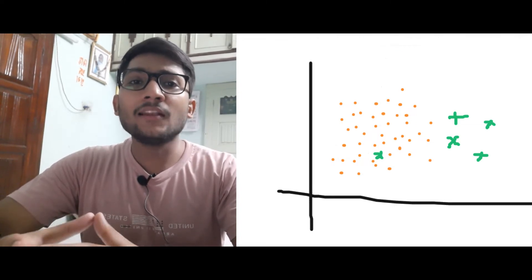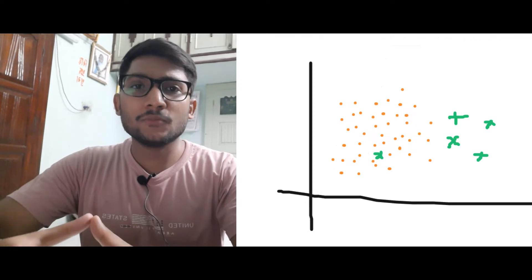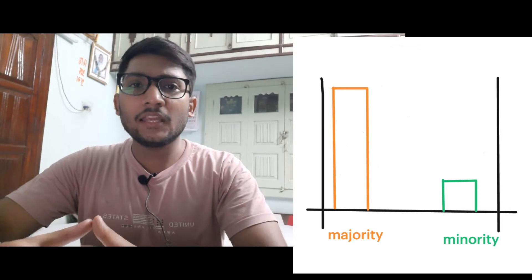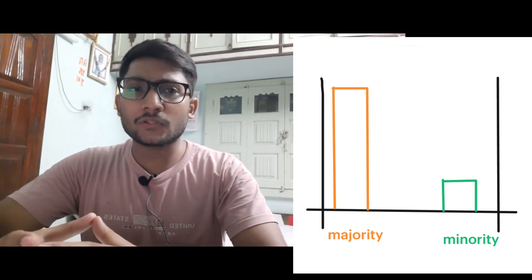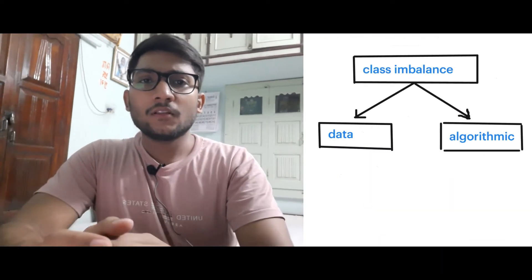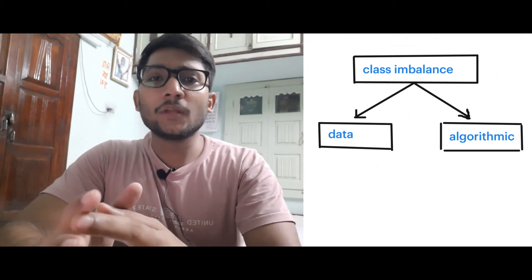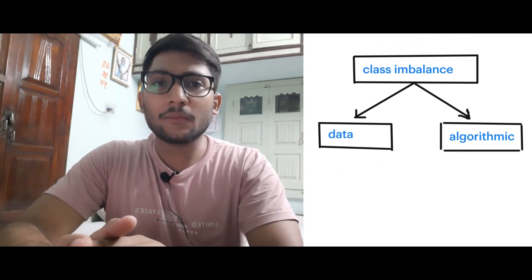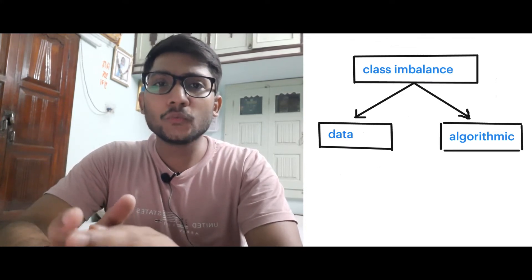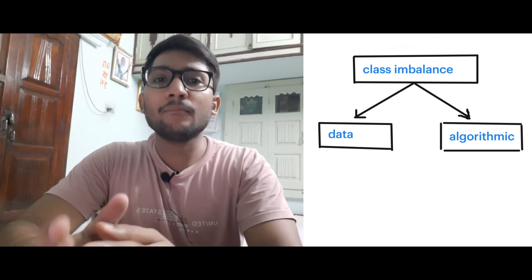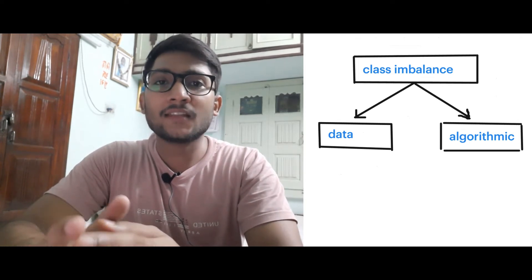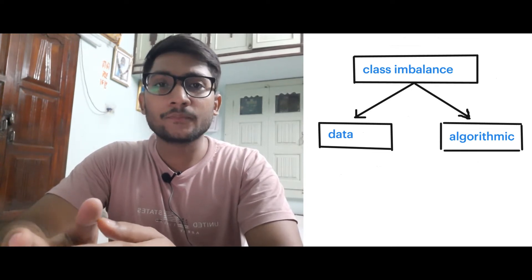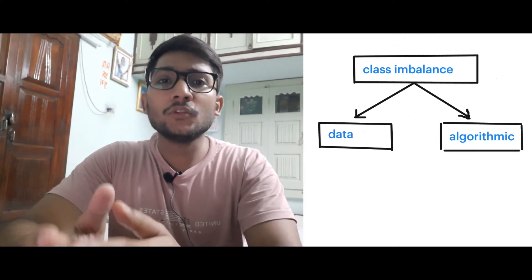How do we handle such an imbalanced data distribution? There are multiple techniques that we deploy in machine learning in order to handle imbalanced data distribution. The approaches could be broadly grouped into two categories: one is the data approach, the other is the algorithmic approach. Under the data approach, we modify our data in order to resample the distribution, whereas in the algorithmic approach, we assign different techniques based on the algorithm.